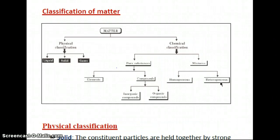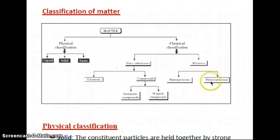For example, if you add oil into water, it does not give you a uniform composition — there will be a layer of oil on the water's surface. Since oil is not soluble in water, it is not going to give you uniform composition everywhere. Hence, this type of mixture is called a heterogeneous mixture.